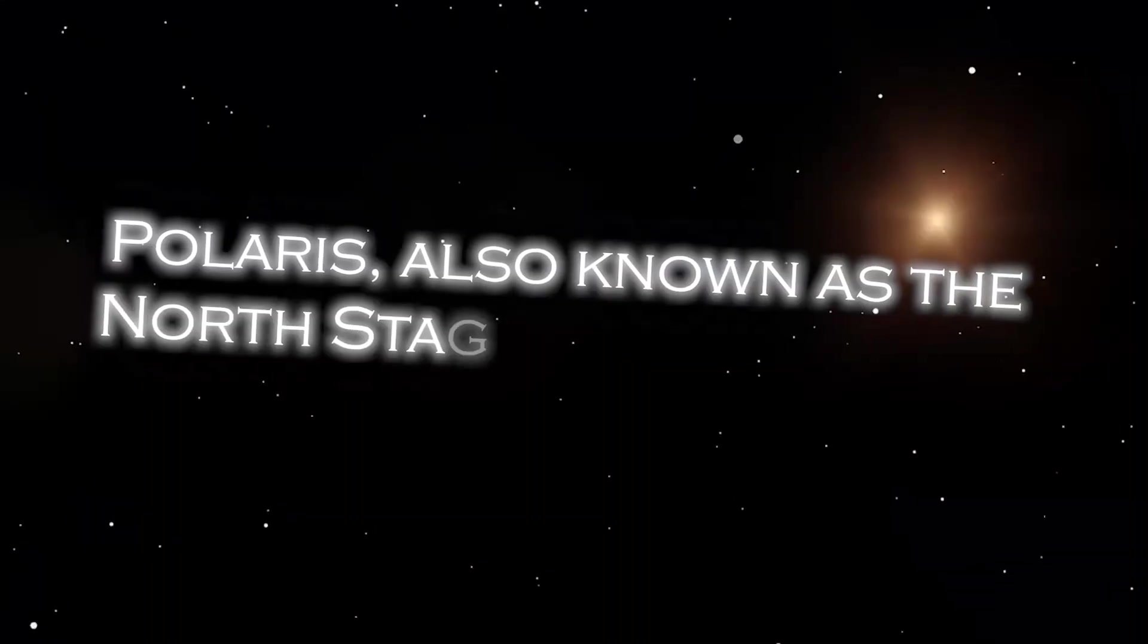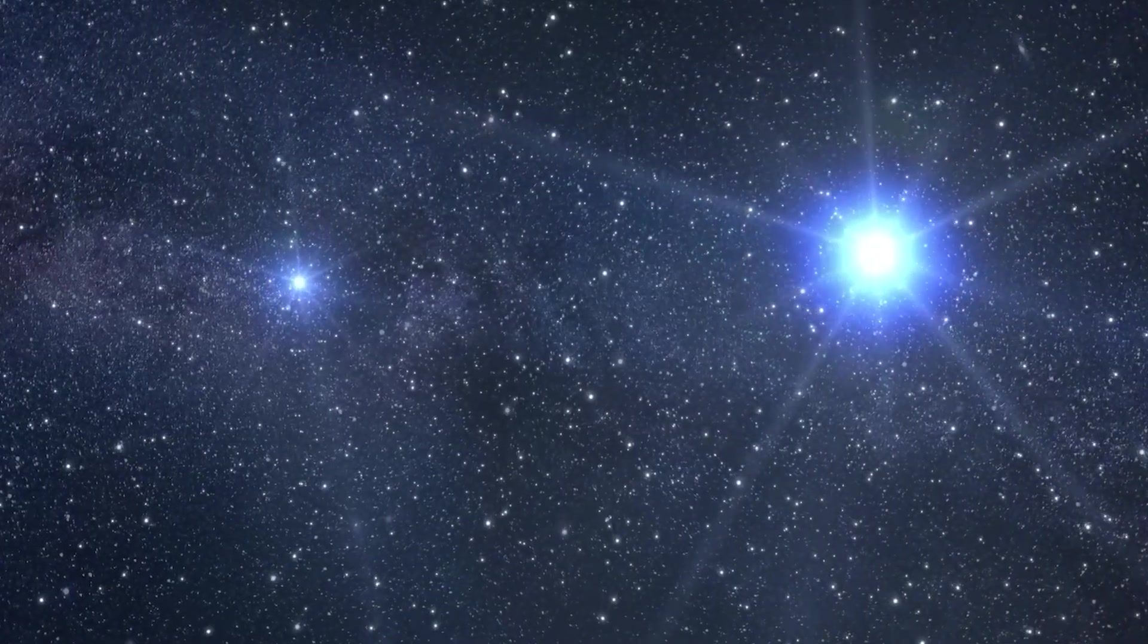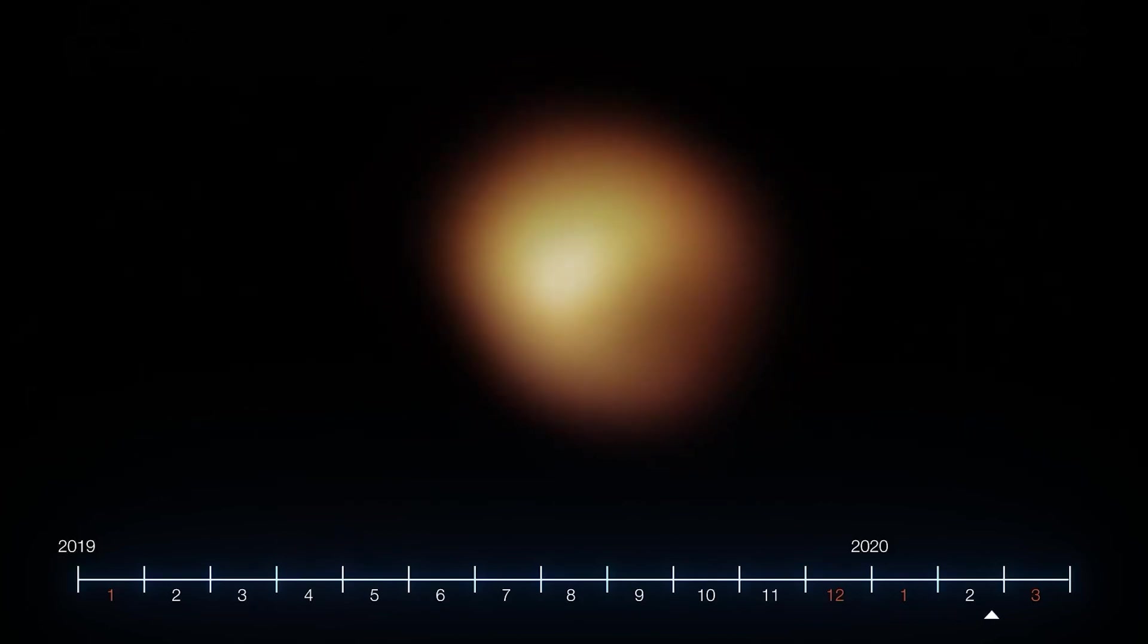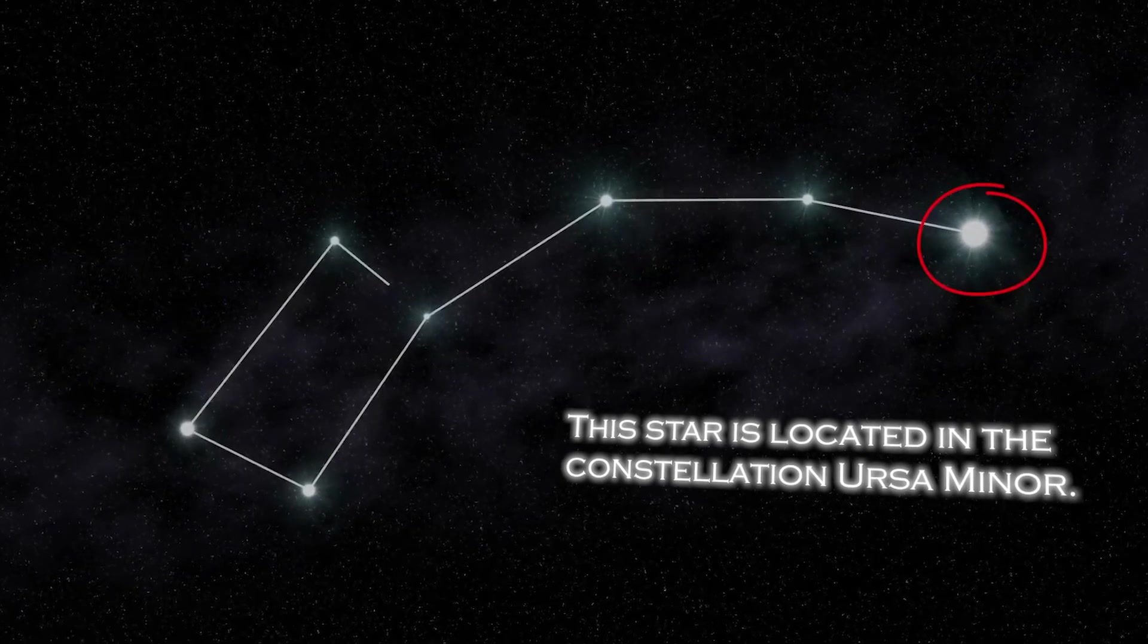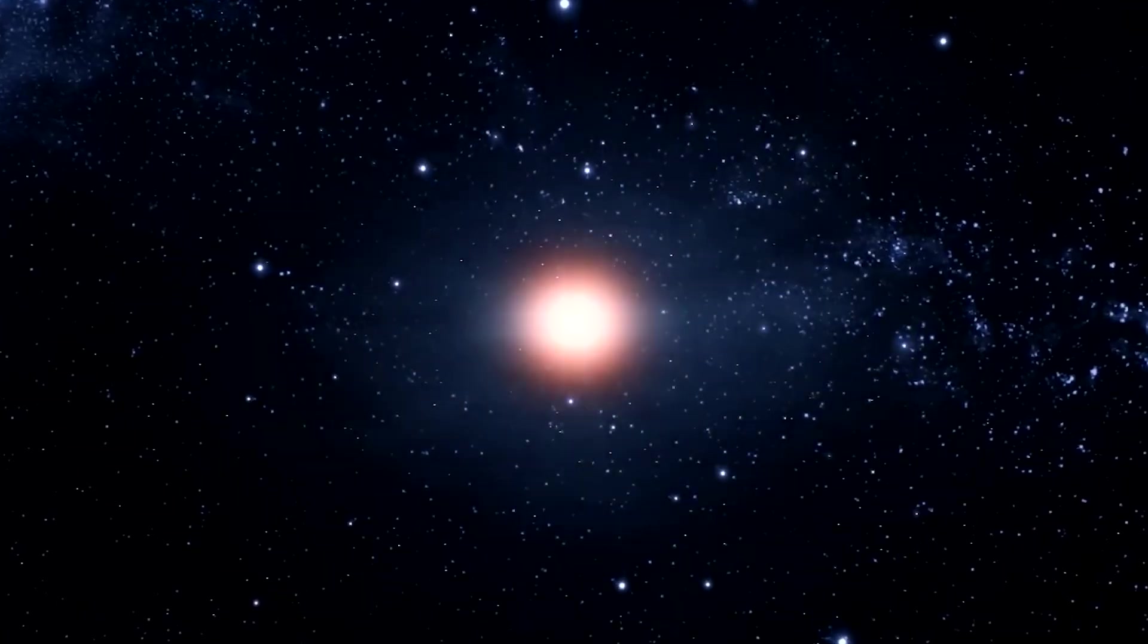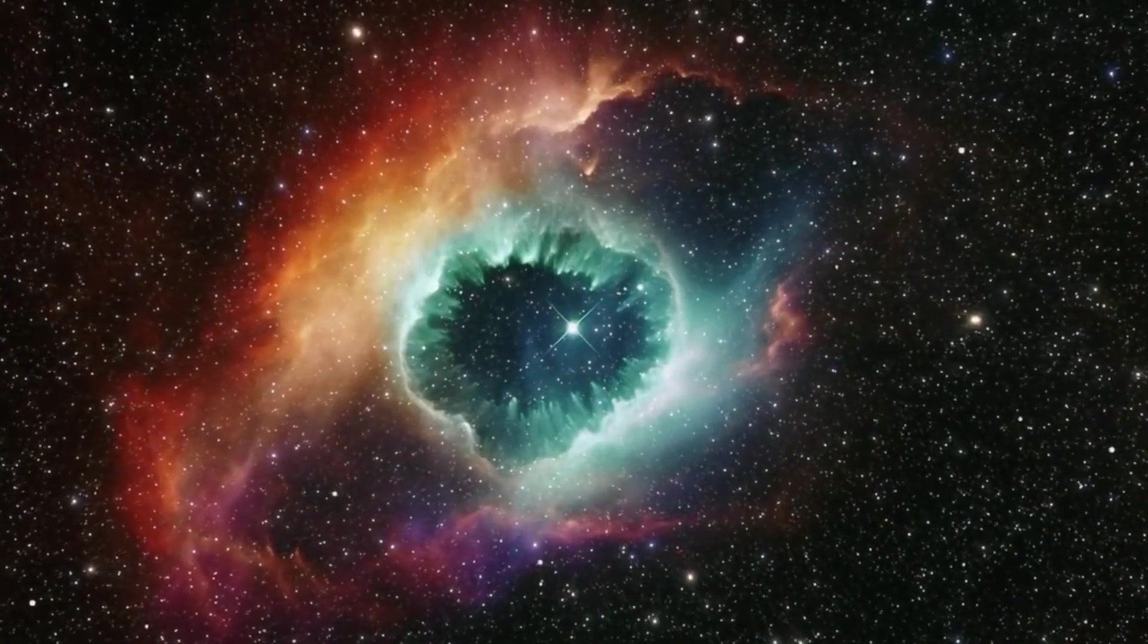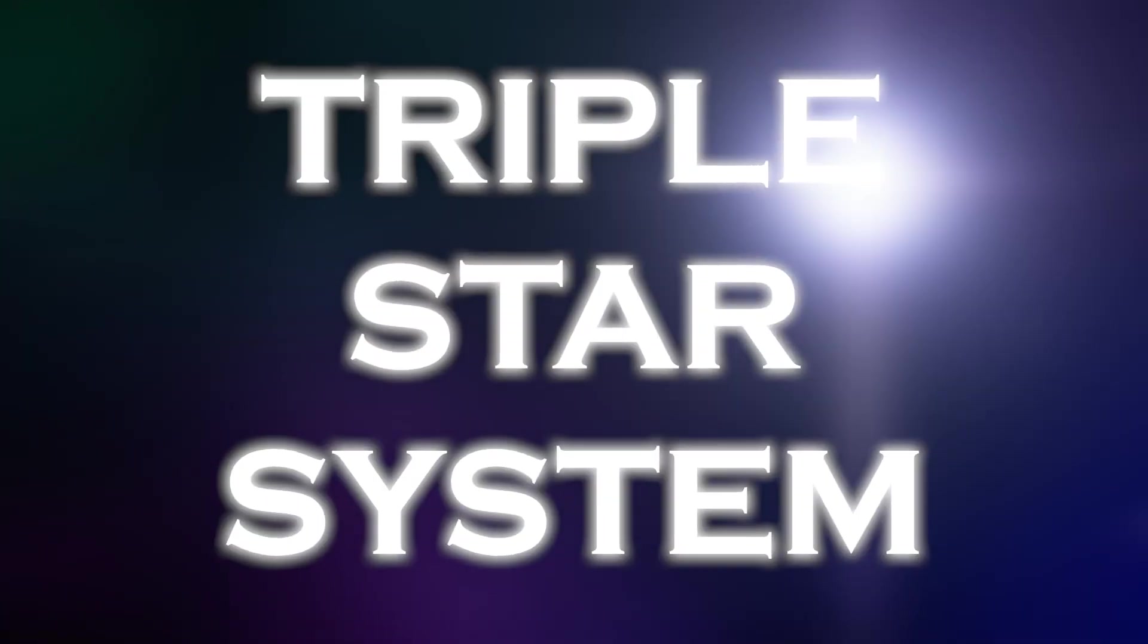Polaris, also known as the North Star, occupies a special position in the sky because of its proximity to the celestial North Pole. It is almost directly over the Earth's North Pole, which gives the illusion that it remains static in the northern sky. The star is located in the constellation Ursa Minor. Polaris is a star of moderate brightness that stands out as a yellow-white supergiant of considerable dimension compared to our Sun. Despite its appearance as a lone star, it is actually part of a rather complex triple star system.